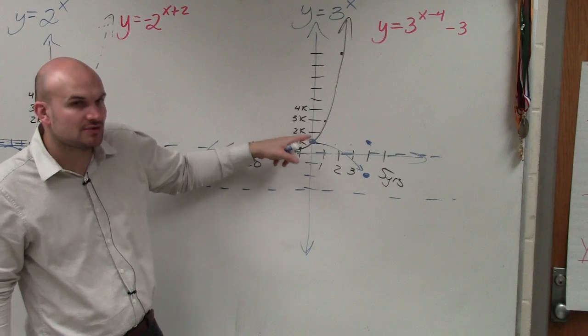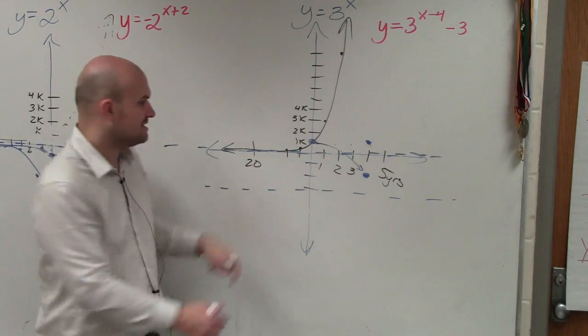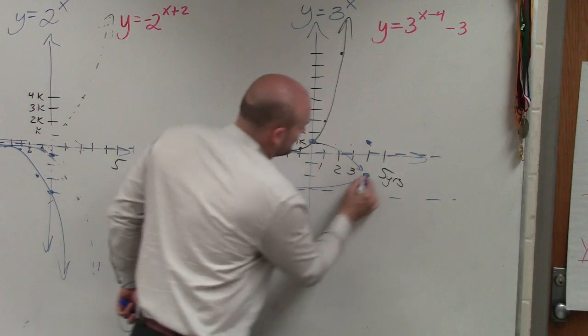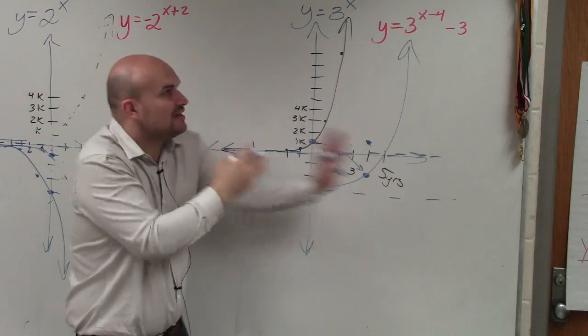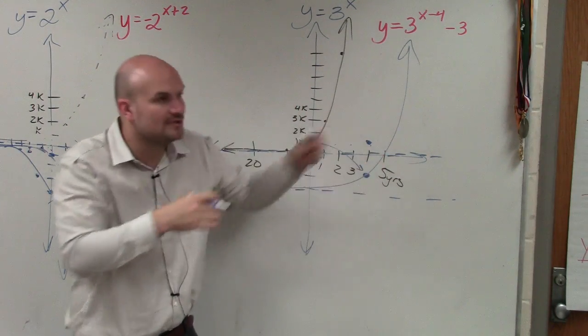Now, all I'm going to do is redraw this graph. These points are exactly the same. So my graph's going to look something like this. It's the same graph, just shifted over four units, down three units.